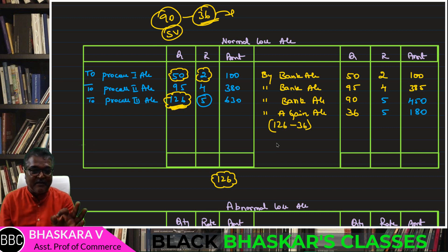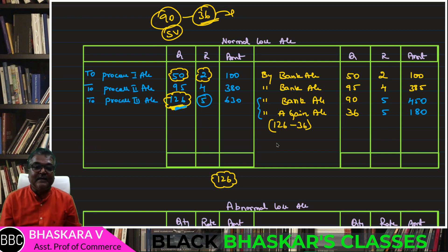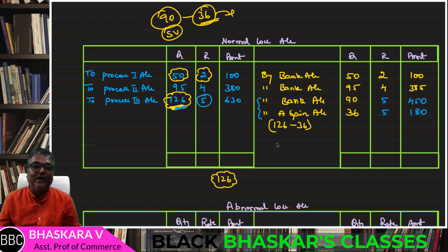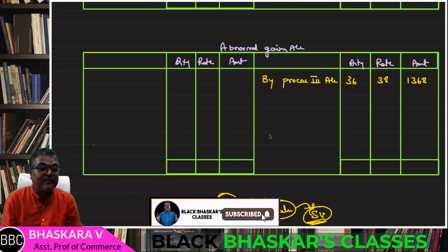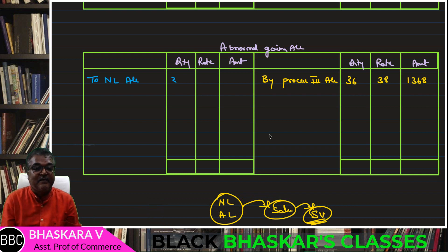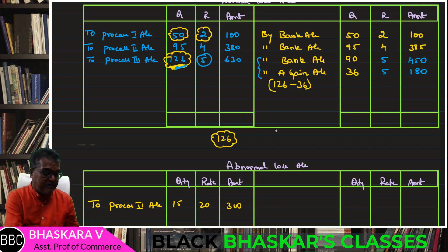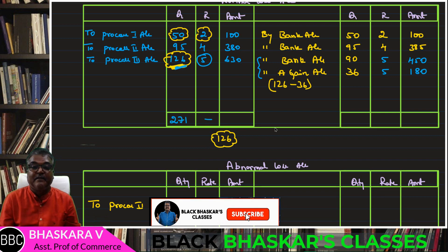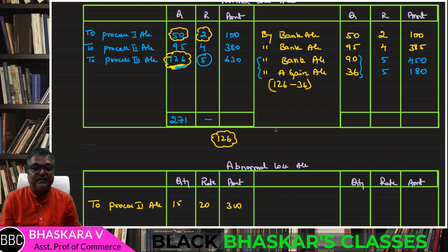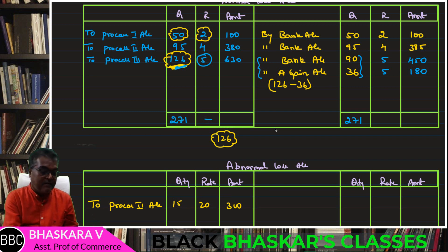Final conclusion: Abnormal Loss Account totals — 50 plus 95 plus 126 = 271 units on both debit and credit sides. The amounts: 100 plus 380 plus 630 = 1,110. This balances both sides of the Abnormal Loss Account.